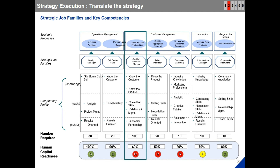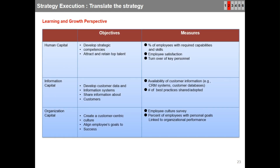Once we identify the competency and number of employees required, the leadership team can assess human capital readiness — green shows readiness, red shows a gap, and yellow means alert. Now let us convert all requirements of learning and growth into strategic objectives. For human capital: develop strategic competencies and attract and retain top talent. For information capital: develop customer data and information systems, and share information about customers. For organizational capital: create a customer-centric culture and align employees' goals to success.